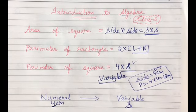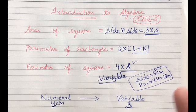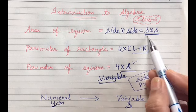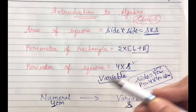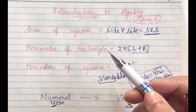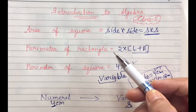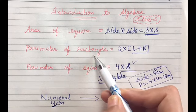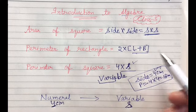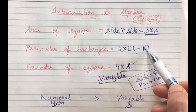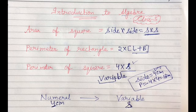For making general formulas, such formula which we can use anywhere - like side into side is such a formula that wherever we have to find area of square, we can use it. Similarly perimeter of rectangle is a general formula, 2 into L plus B. Put the value of L, put the value of B, you will get it.